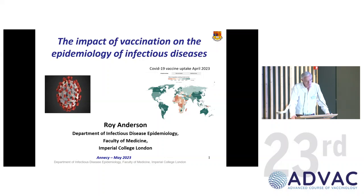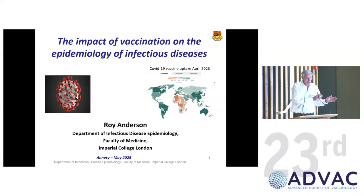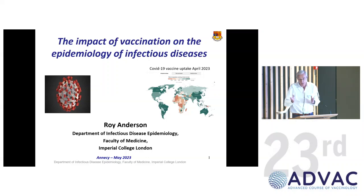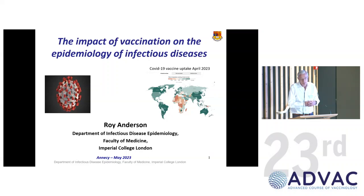What I'm going to do — the objective is to give you some idea about how vaccination alters the pattern of infection that you see. This pattern after an immunisation programme is introduced is often misinterpreted, and I'll point to some examples. Then I want to talk a little bit about the modern techniques of measurement of transmission and the impact of vaccination.